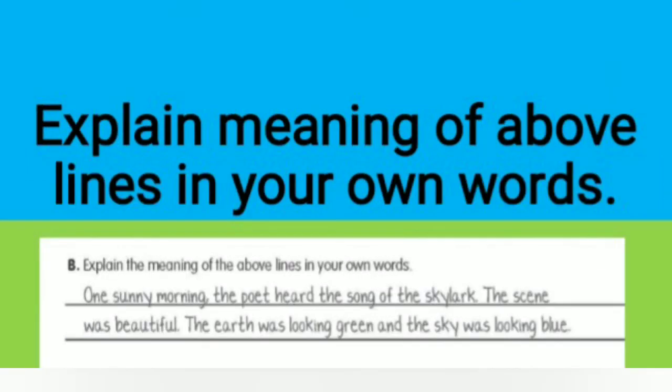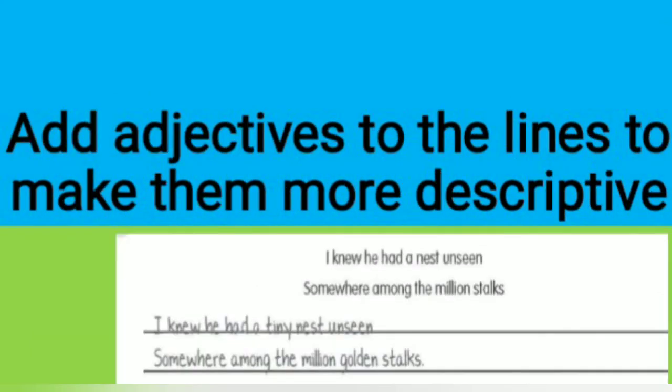Explain the meaning of the above lines in your own words. One sunny morning the poet heard the song of the skylark. The scene was beautiful; the earth was looking green and the sky was looking blue. Next question: add adjectives to the lines to make them more descriptive. 'I knew he had a tiny nest unseen somewhere among the millions of golden stalks.'